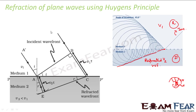When each point of the incident wave front interacts with the boundary, it gives rise to secondary waves which travel with velocity v1 in medium 1 and velocity v2 in medium 2. As a result, we get this kind of pattern of secondary wave fronts, and a common tangent joining these secondary wave fronts gives rise to the refracted wave front. So this was the concept of refraction.